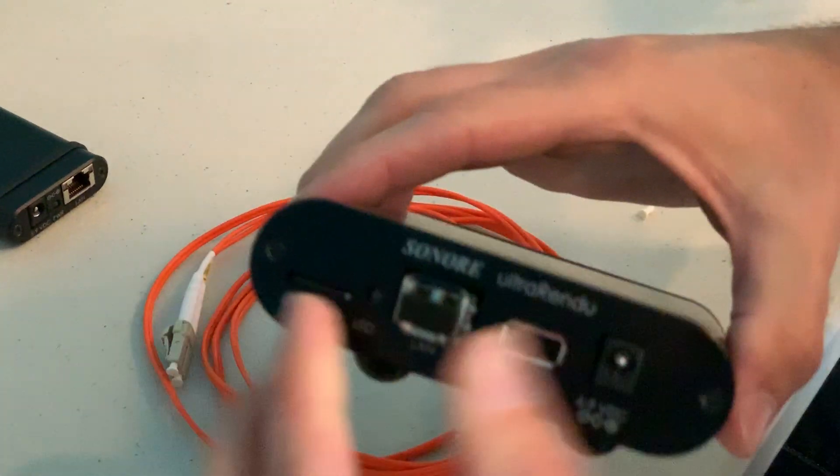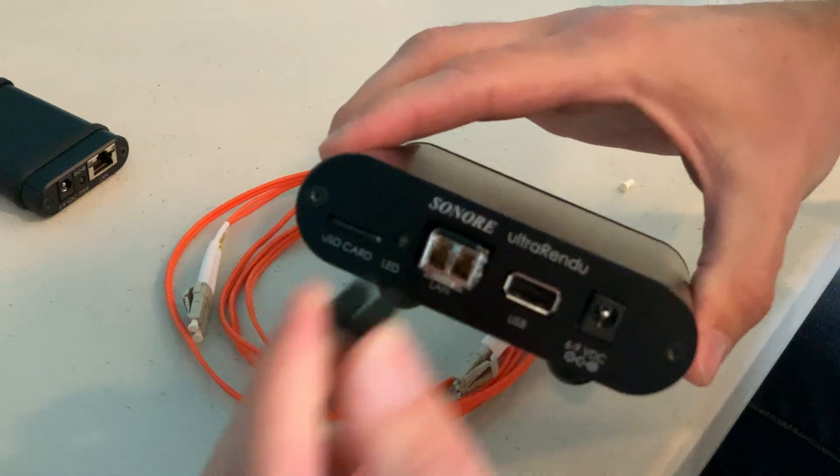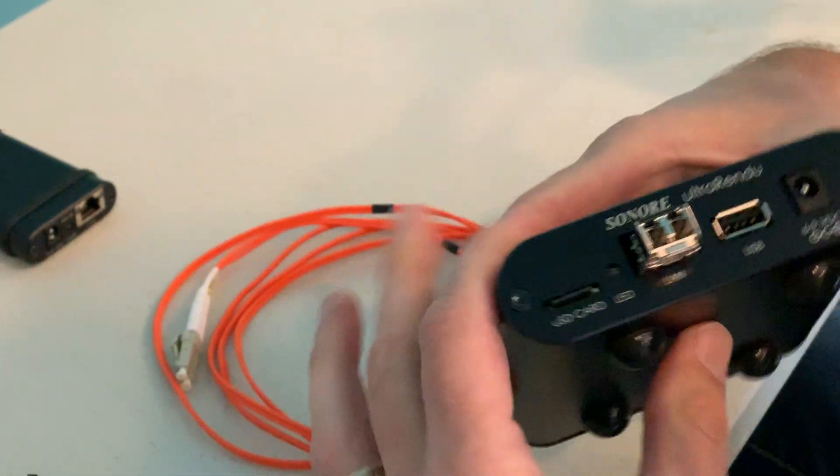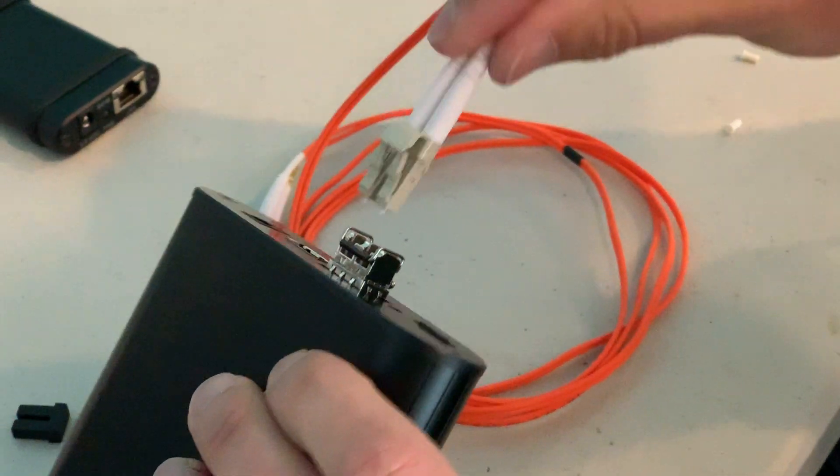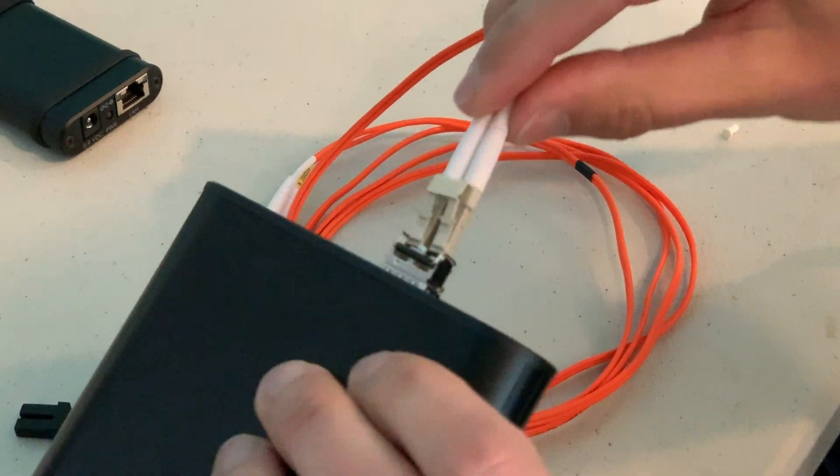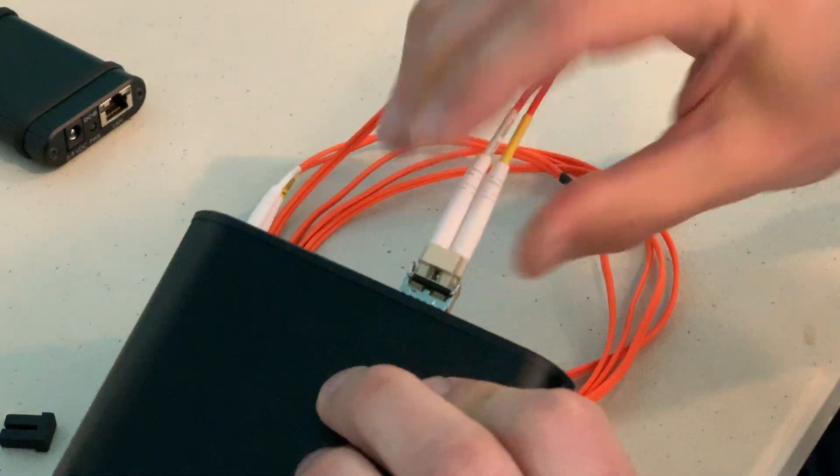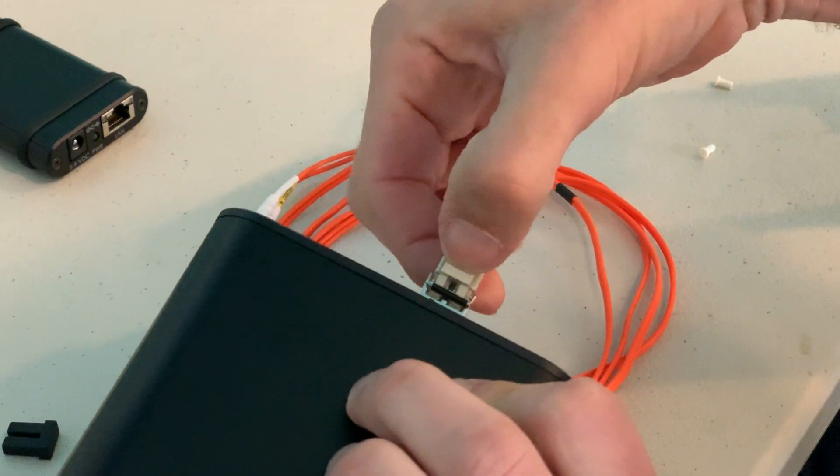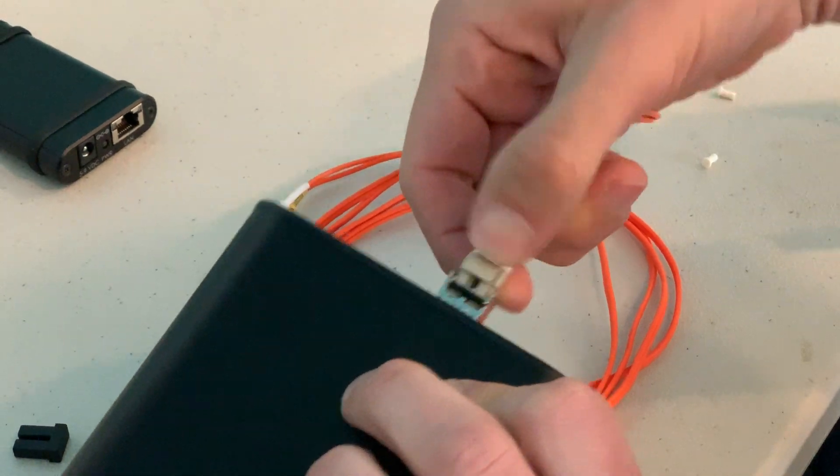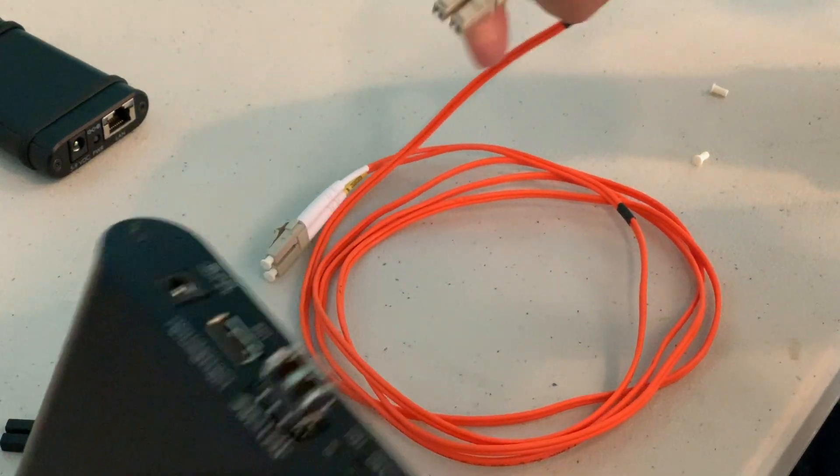This thing also has a little protector—this little rubber thing. Pop that right out. When you're done with that, the cable goes right in here with a nice little click. If you ever want to eject it, just push down on this and it comes right out.